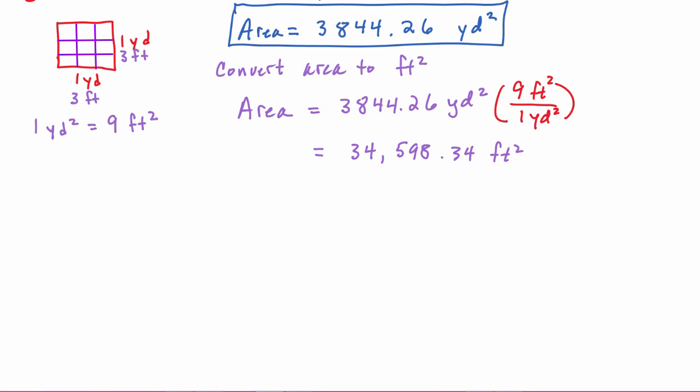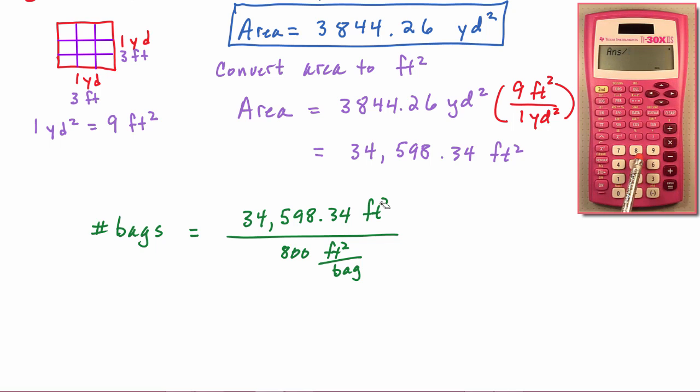Now we will be able to determine the number of bags of grass seed we will need. We know we have 34,598.34 square feet and that's going to be divided by the 800 square feet per bag. So you can see the units will work out. If we were to multiply by the reciprocal, the bag would go into the numerator and feet squared are going to cancel feet squared.